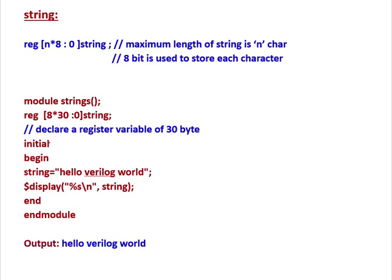How to declare that one? This is the example. Here 'reg' is to hold the data. Then n asterisk 8 colon 0. n means the number of characters that we want to include in the string. Then the number of bits that each character is. For example, if you write A, B, C, so here n equals three. Maximum three characters it can hold. And each character is 8 bits here. So n asterisk 8.